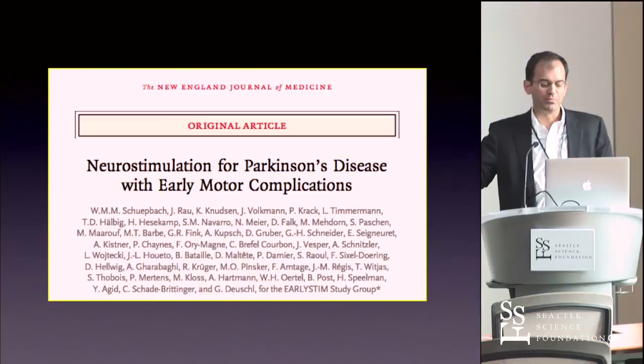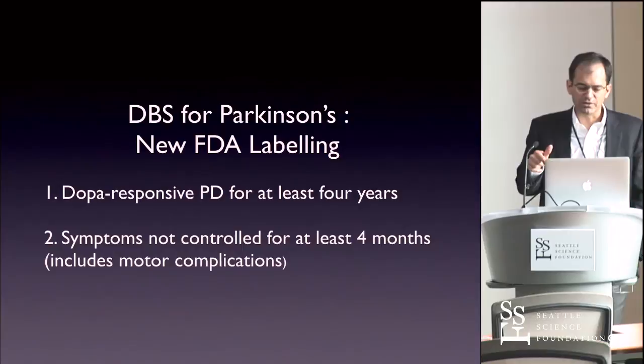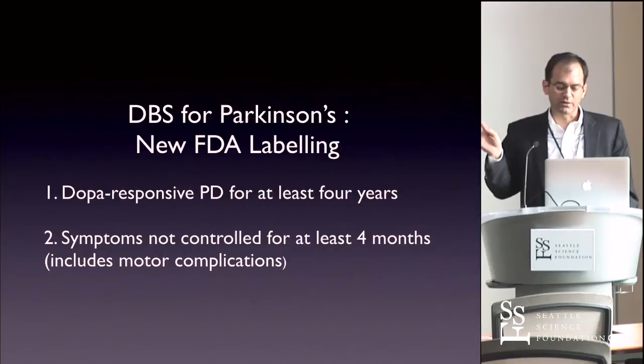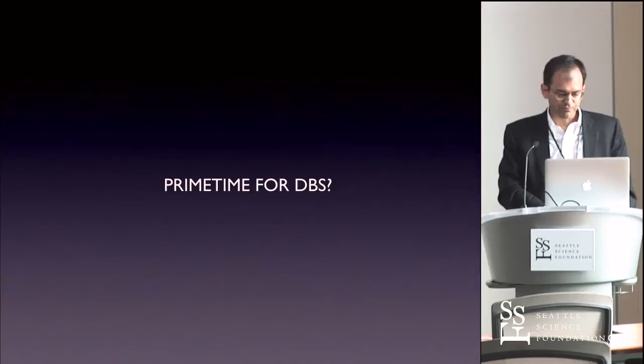Last fall, the FDA changed their labeling for deep brain stimulation for Parkinson's. To be considered a candidate, you have to have had dopamine-responsive Parkinson's for at least four years and then problems with medication for at least four months — four years and four months. That's a line in the sand. It's a lot earlier than what we had been doing before. We're moving into an era where it's prime time for DBS.